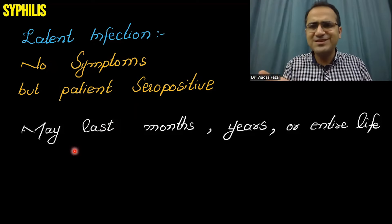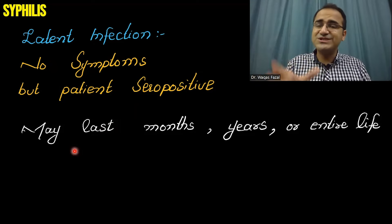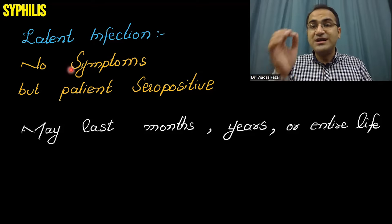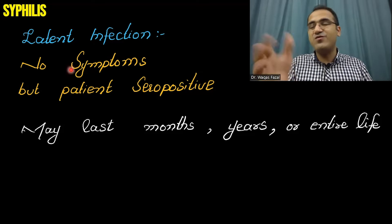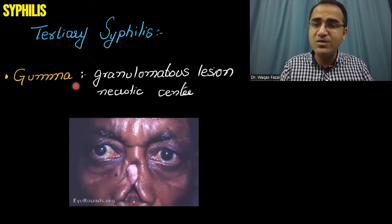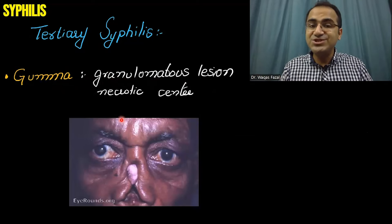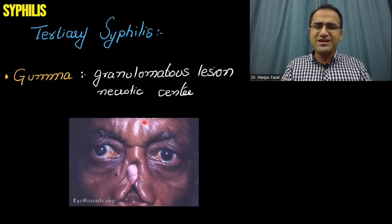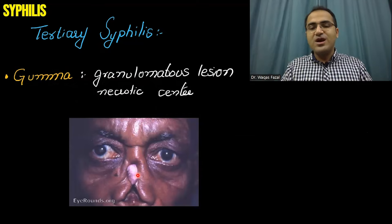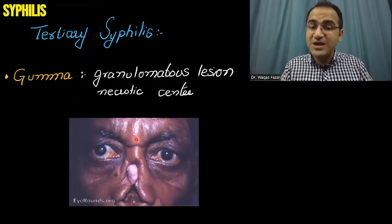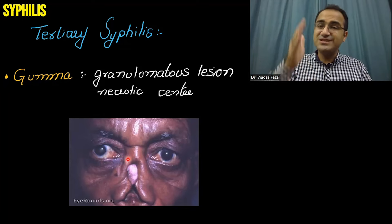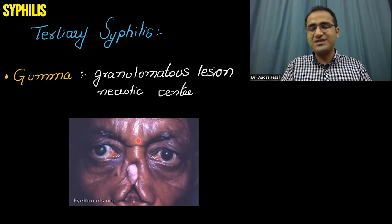But in some cases — in almost 35% of cases — this latent infection can convert into tertiary syphilis, which is a more drastic and severe form of infection. In tertiary syphilis, there is gumma formation. Gummas are granulomatous lesions with a necrotic center. This is a deforming, ulcerative type of lesion that destroys the body. These gummas are destructive, ulcerative, and very deforming.